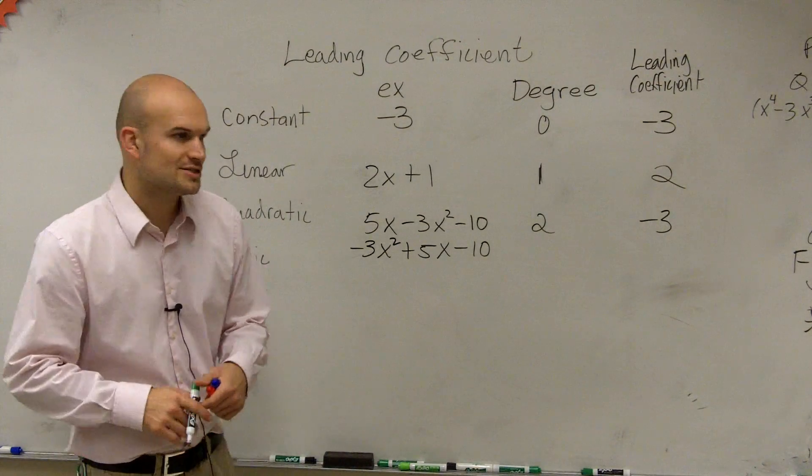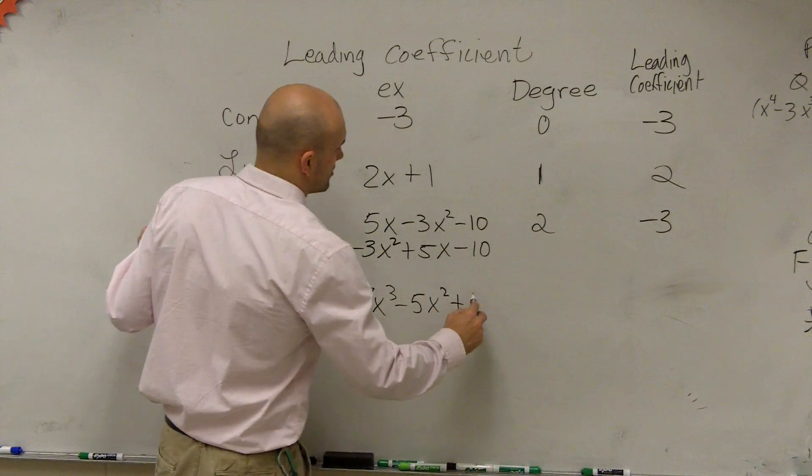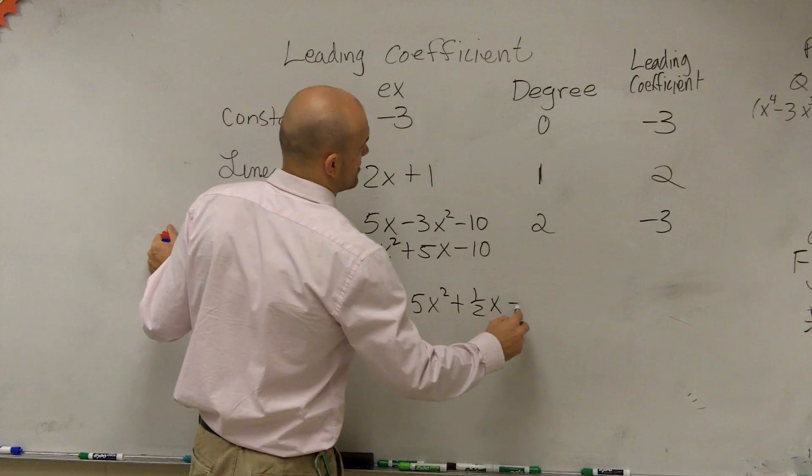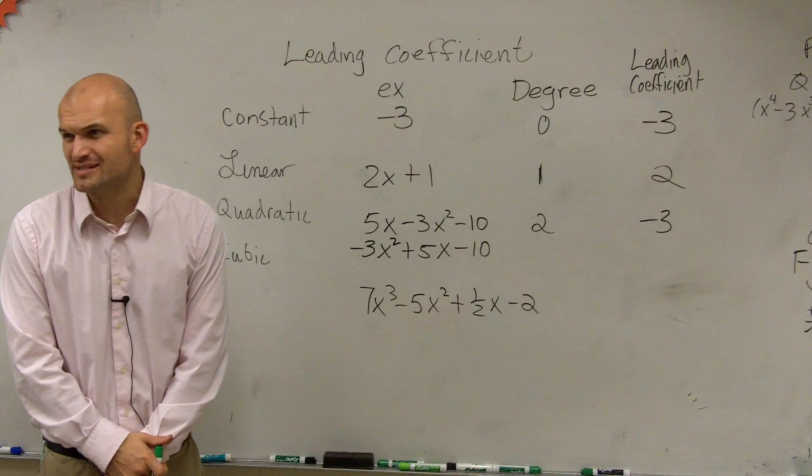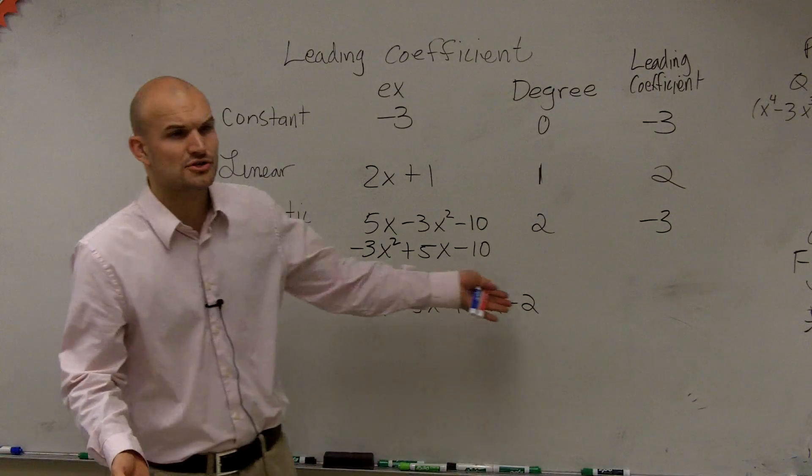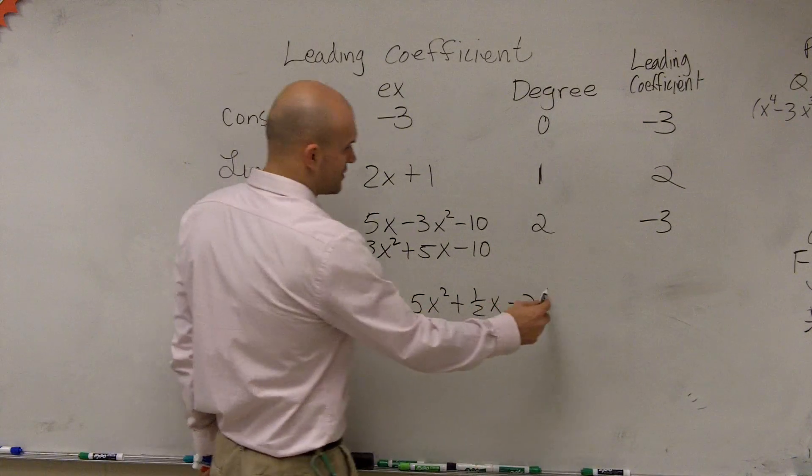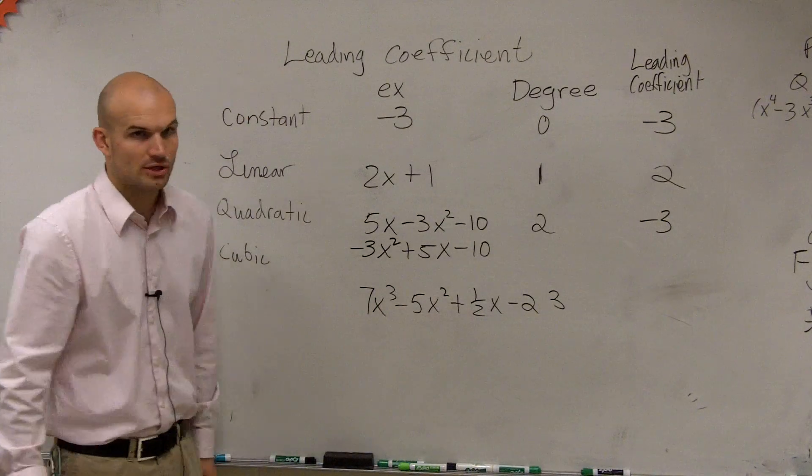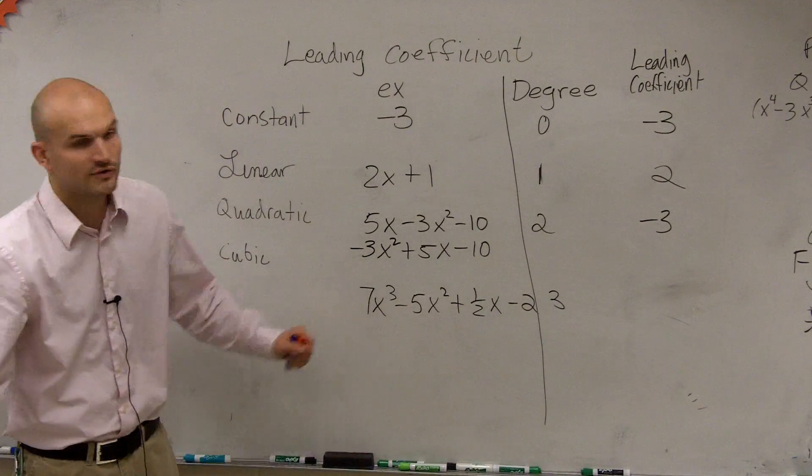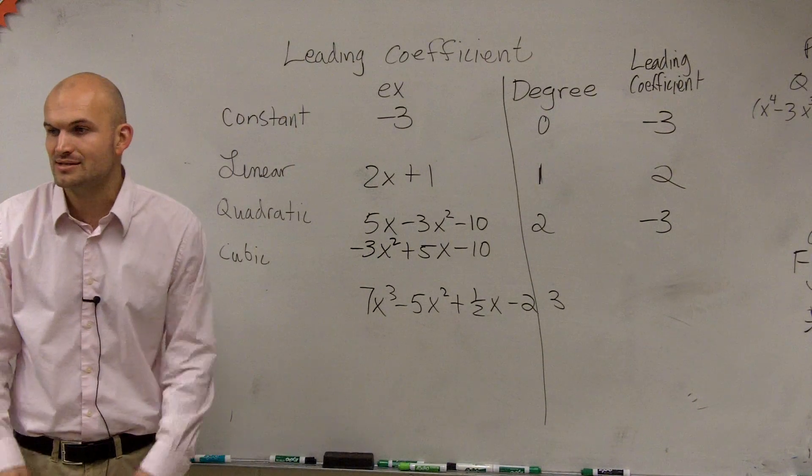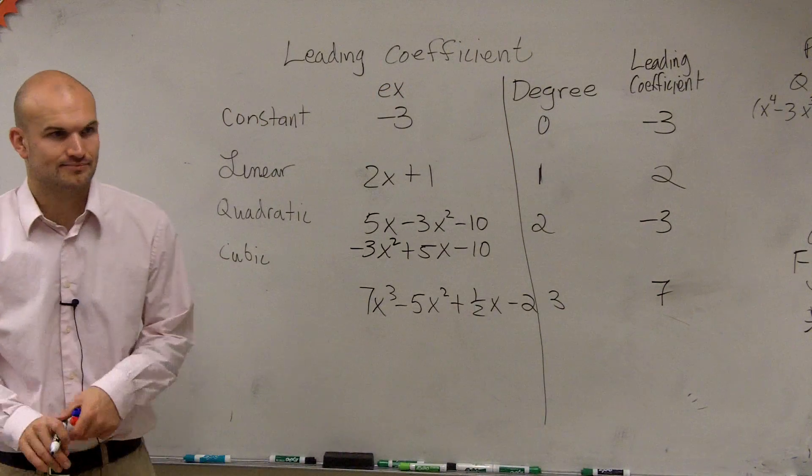So, ladies and gentlemen, let's just do the last one. 7x cubed minus 5x squared plus 1 half x minus 2. So, for this one, again, you guys kind of get the idea. It's pretty basic, right? First, you find your degree. The degree is always going to be your monomial with the largest degree, which would be your largest exponent. So, in this case, our degree is 3. Then, when we look at it, our degree is 3. So, we have a degree of 3, and then our leading coefficient in this example is 7. Pretty basic, right?